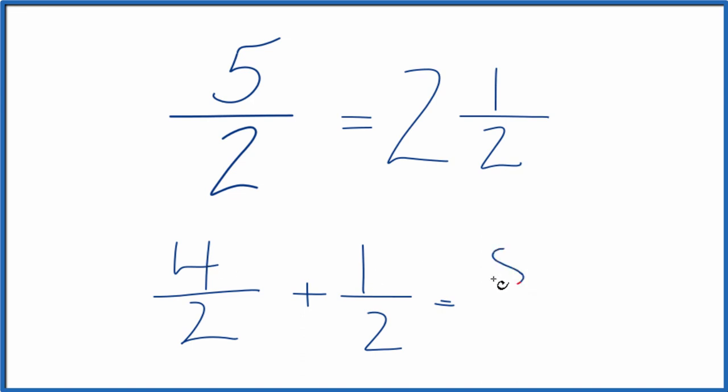So 4 plus 1 is 5 over 2. Since we're adding these fractions, we just bring that across and we have 5 over 2.